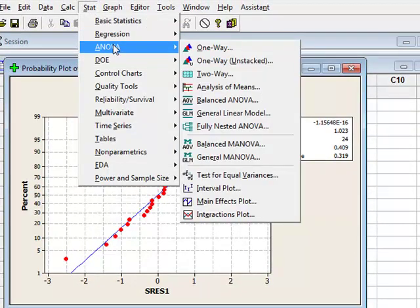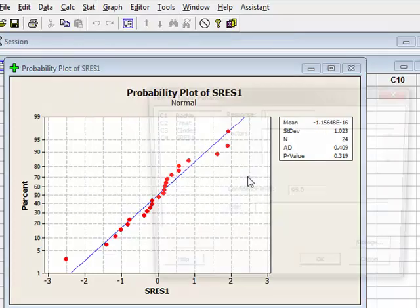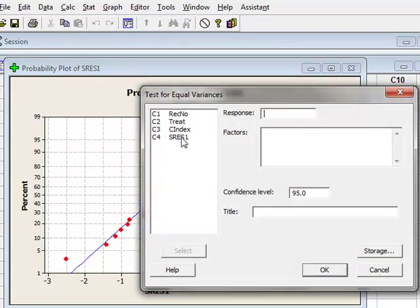We can also perform a separate test for the equality of variance by going to Stat. And within the ANOVA menu, we have a test for equal variances. And for responses, we will use the residual variable. And again, the factor is the treatment. And we will run this analysis.